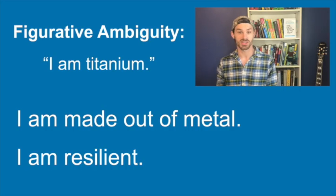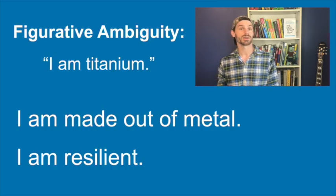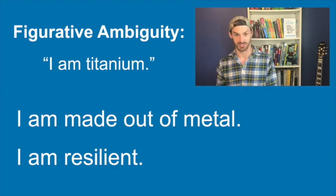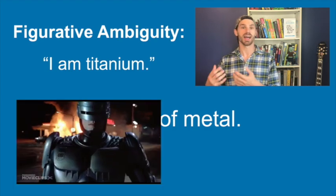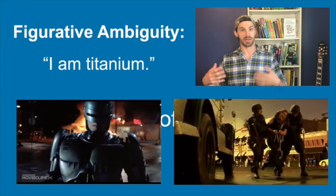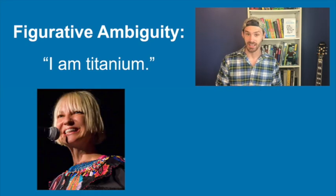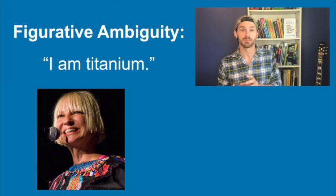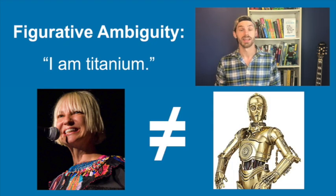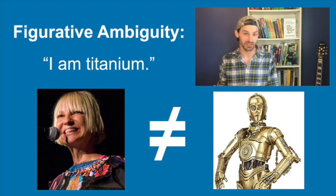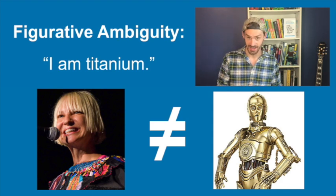Figurative ambiguity is also easy to understand. That's when a sentence can have a literal meaning as well as a figurative meaning, such as "I am titanium" or "Baby, you're a firework." Of course, when Sia sings "I am titanium," we don't literally take it to mean she's made out of metal. It's figurative, and we come to this conclusion based entirely on context. If RoboCop were to say the same thing, we might take him to be speaking literally.